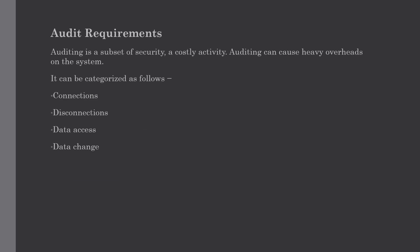The next topic is audit requirements, which is also a very important topic in data warehouse security. Auditing is a subset of security and a very costly activity that can cause heavy overheads on the system. To complete an audit in time, more hardware is required, so wherever possible auditing should not be overused. Audit requirements are classified into four categories: connections, disconnections, data access, and data change. For each category, it is necessary to audit successes, failures, and both. From a security perspective, auditing failures is very important because they can highlight unauthorized or fraudulent access.